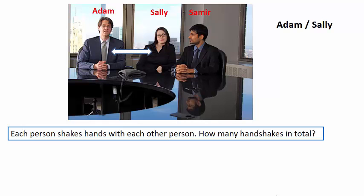There's one possibility: Adam shakes hands with Sally, Adam shakes hands with Samir, and Sally shakes hands with Samir. That's a total of three different handshakes, isn't it?